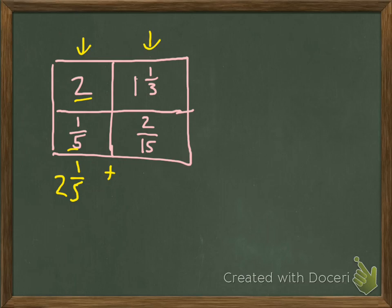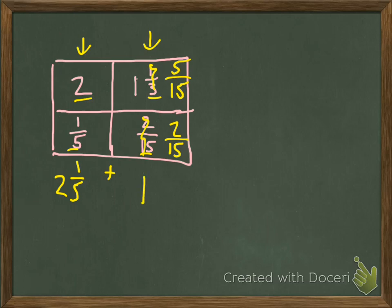Now I have 1⅓ and 2/15 that I need to add together. I need to find a common denominator for 3 and 15 because when we add fractions we need matching denominators. From previous lessons, 15 is the least common denominator. So 2/15 stays as is, and ⅓ becomes 5/15. I take 1 and 5/15 and add 2/15, giving me 1 and 7/15.